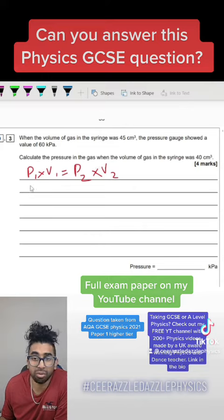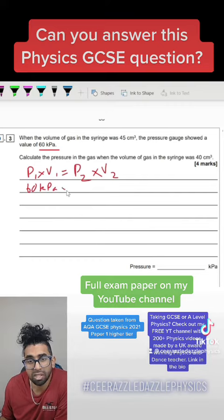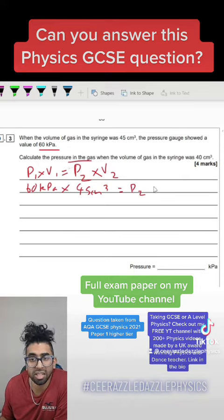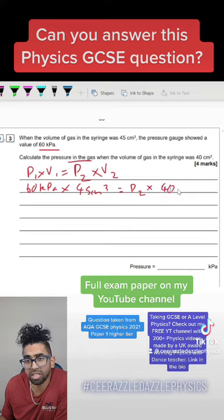Then we're going to plug the numbers in. So we're going to do pressure 1, which is 60 kilopascals, times by the volume 1 of 45 centimeter cubed, will be equal to the final pressure P2, which we're trying to find out, times by 40 centimeter cubed.